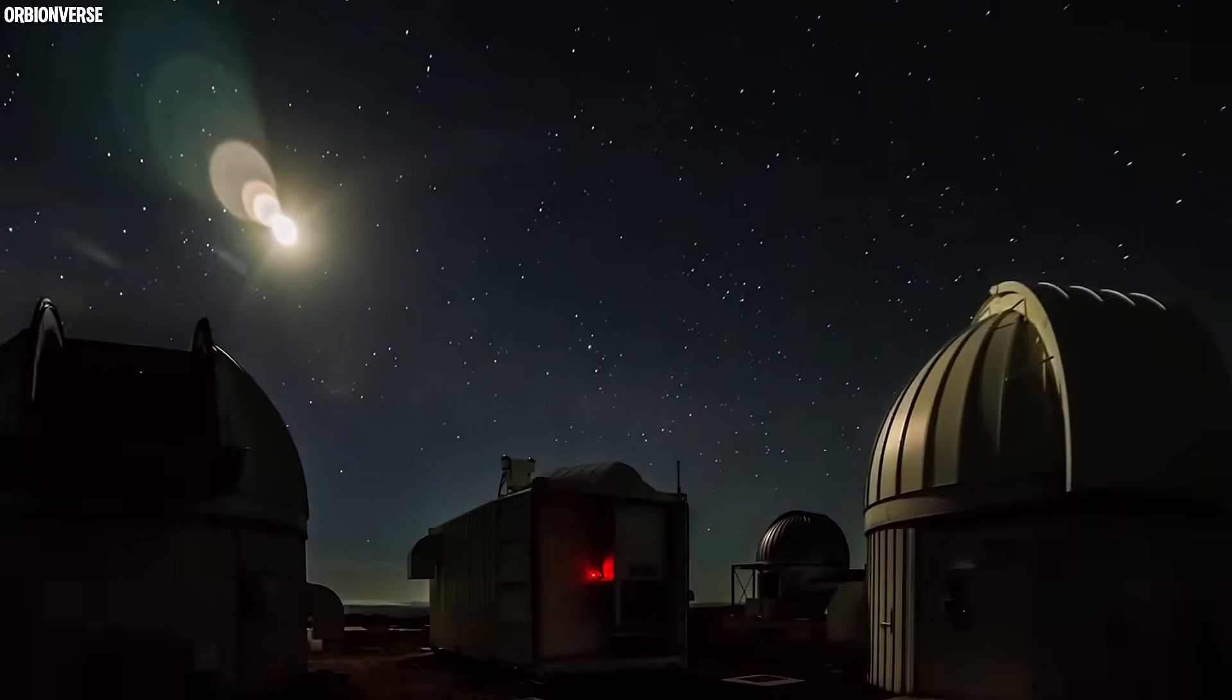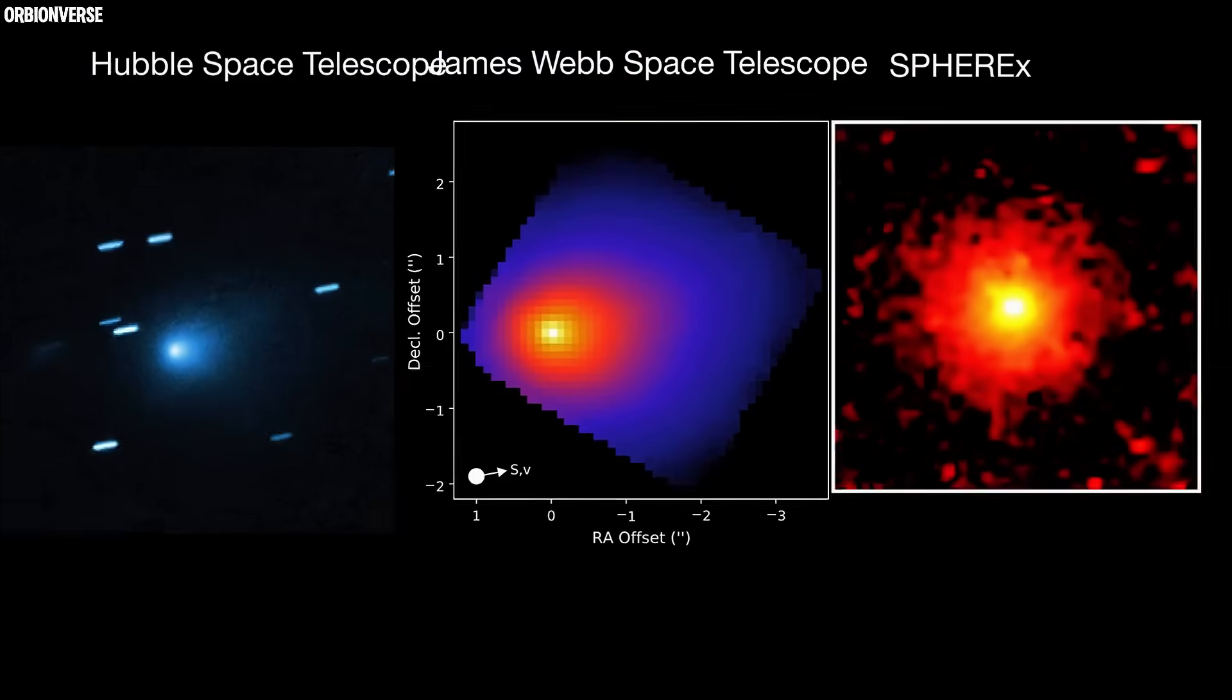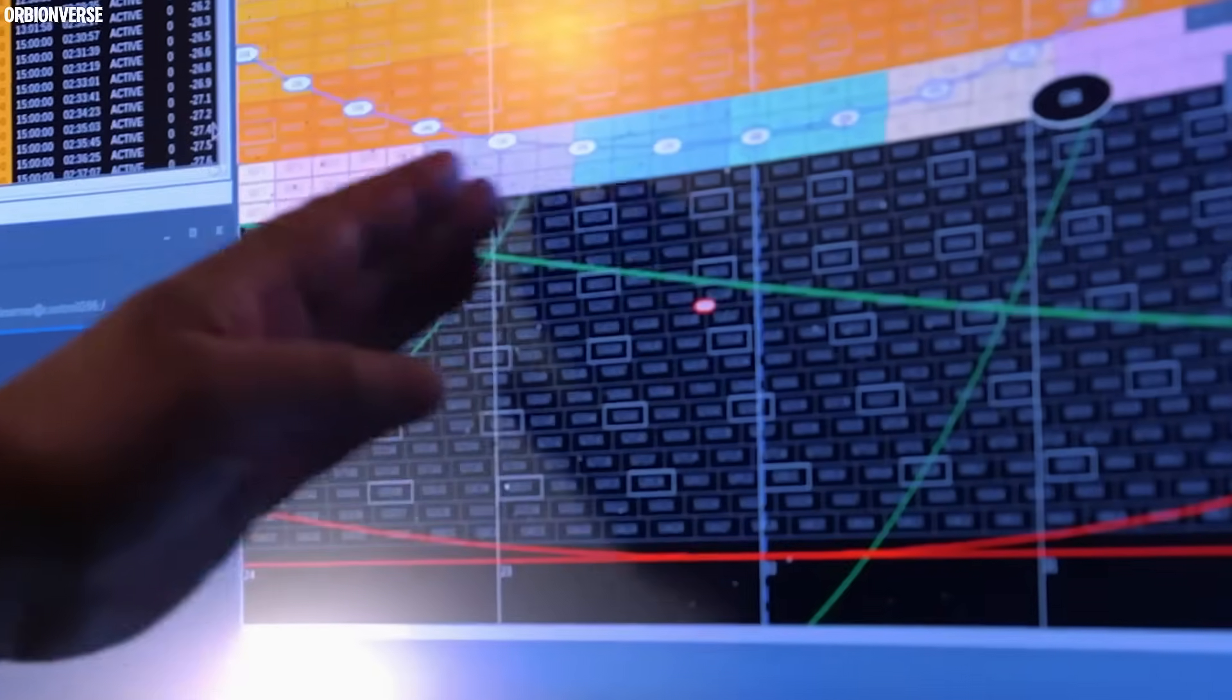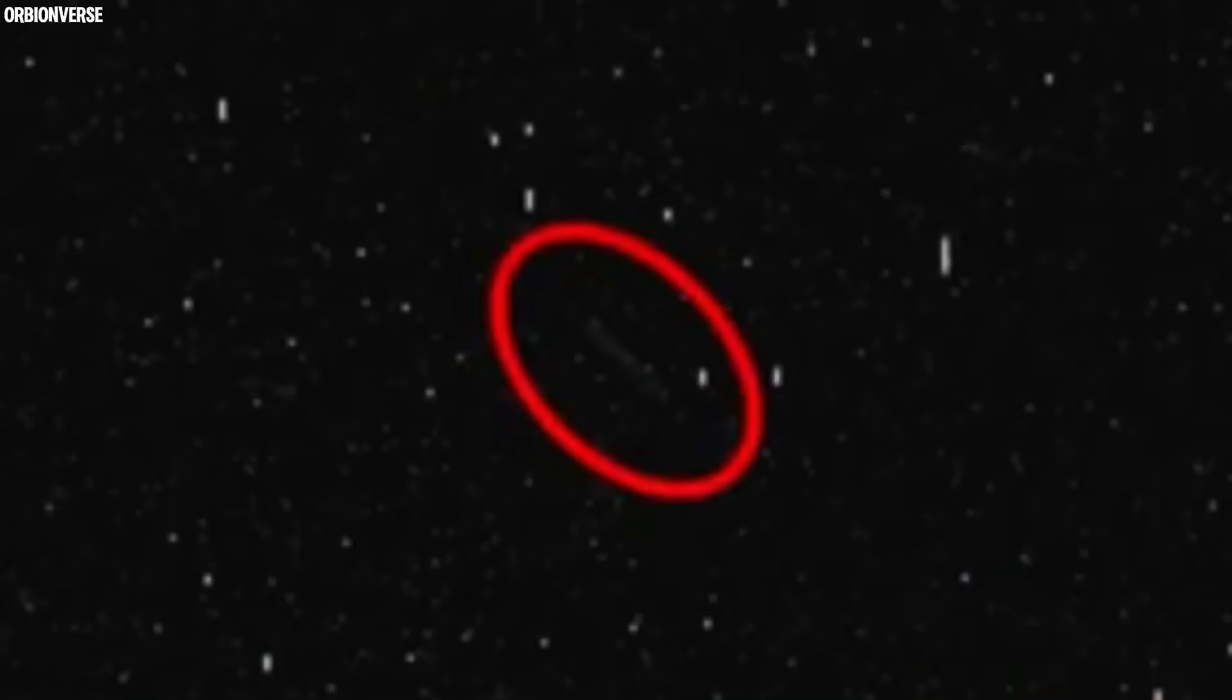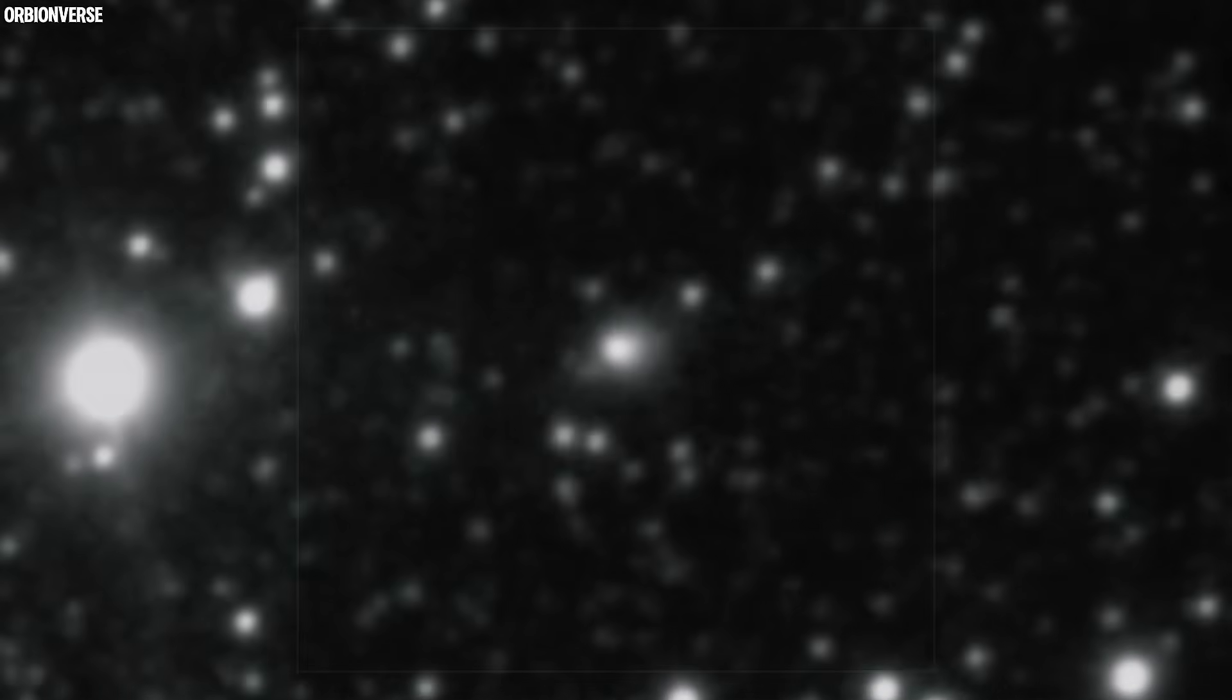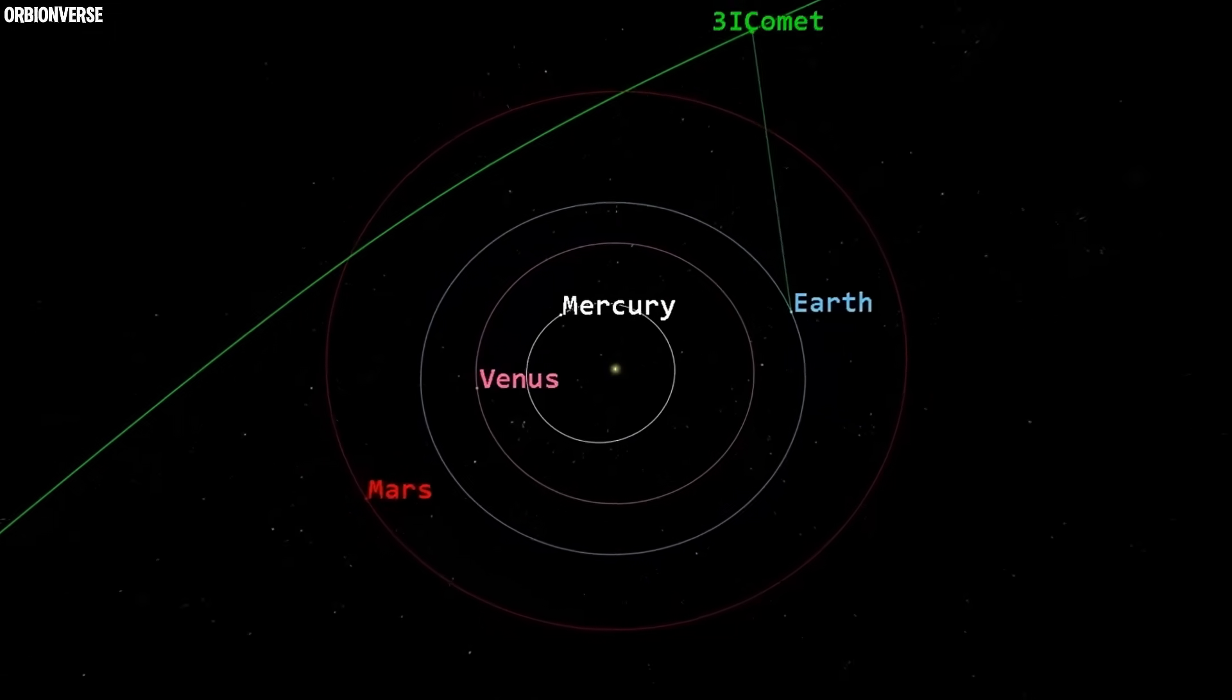...telescopes worldwide are watching - JWST, Hubble, SPHEREX, and powerful ground-based instruments are gathering as much data as possible before it slips away forever into the dark. Scientists hope to learn more about its dust grain composition, isotope ratios, and rotational behavior, searching for clues that could rewrite our understanding of interstellar bodies.